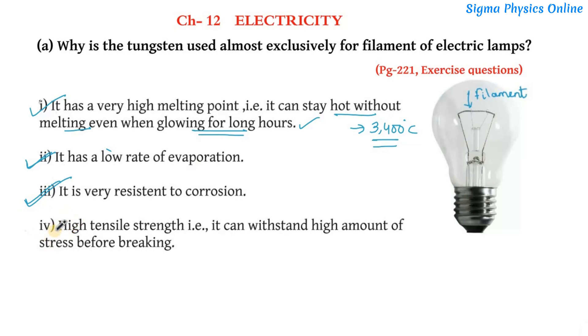Fourth is high tensile strength. That is, it can withstand high amount of stress before breaking. Thus, tungsten is preferred over other metals for making the filament of electric lamps. So this is the answer to this question.